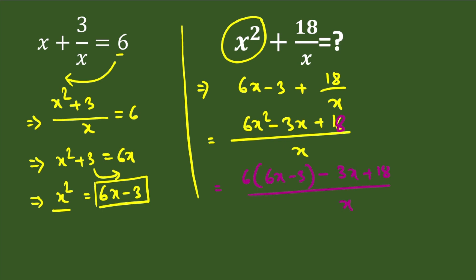Now simplifying this, we'll multiply 6 with the bracket value. So it will be 6 times 6 is 36x, minus 6 times 3 is 18, minus 3x plus 18, and the whole term is divided by x. Here negative 18 and positive 18 will be cancelled.